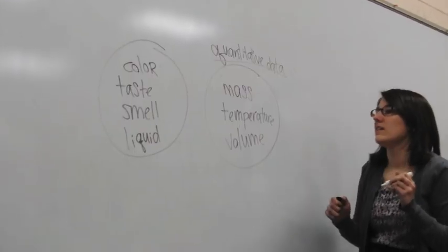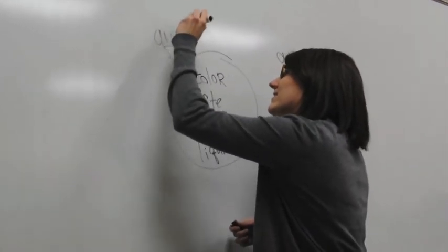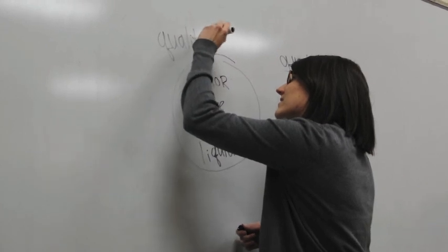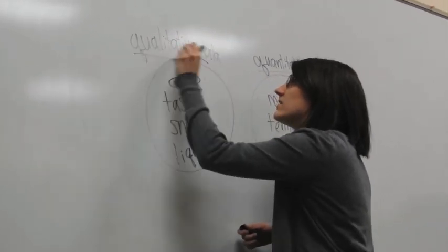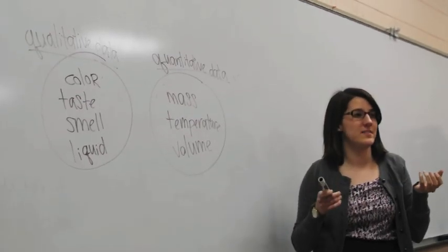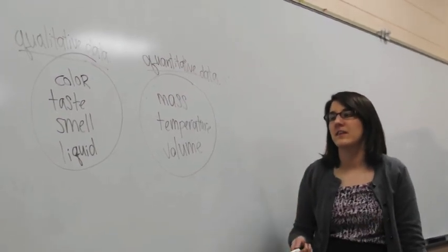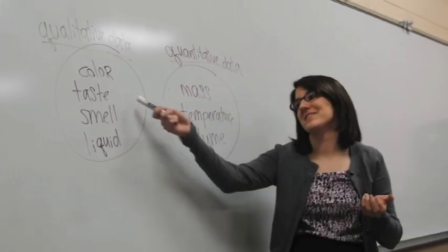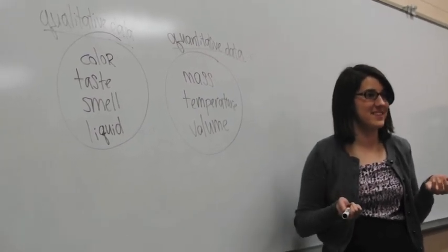Good. Now, this other data, we call qualitative data. Qualitative data, we use to measure the physical qualities of something. We can't really measure it, per se. We can't report the taste of the orange juice. We can't use numbers to describe that, but you can taste it and find out what it tastes like, right?